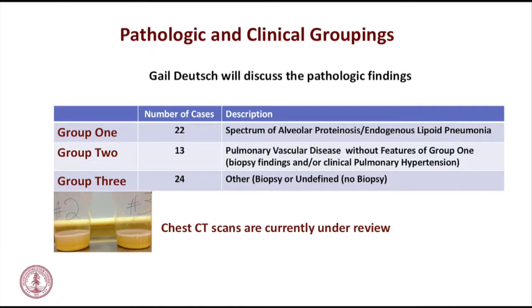Gail Deutsch is going to present the pathology findings. We've put cases into three groups based predominantly on pathology findings and some clinical features, waiting to superimpose radiology. There's a lot of overlap between these groups. In group three, two patients had histoplasmosis, one had candida septicemia, one had bacterial lung infection and septicemia and died. Within group three, no one has had pulmonary artery hypertension or a biopsy with significant pulmonary vascular disease.